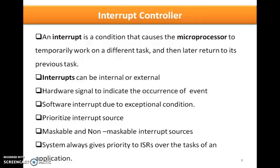Hardware signals are used to indicate the occurrence of an event, whereas software interrupts are also available if an exceptional condition is executed. If more than one interrupt source is available on a system, then prioritizing the interrupt sources is important. Non-maskable interrupt sources will be given the highest priority because the CPU has to immediately pay attention to non-maskable interrupts, which are usually raised by the kernel. Maskable interrupts are interrupt sources which you can temporarily deactivate or keep in a waiting state.